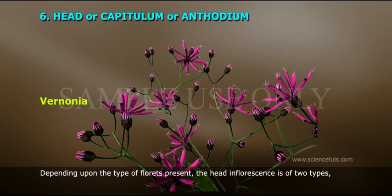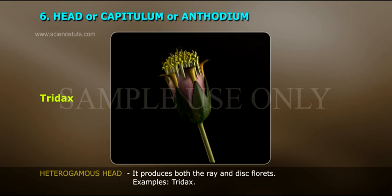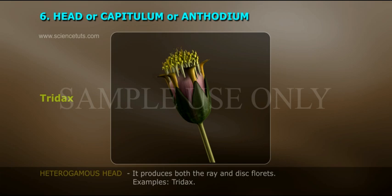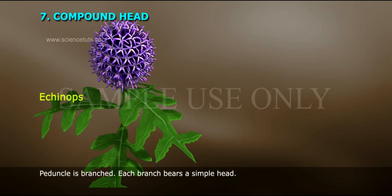Depending upon the type of florets present, head inflorescence is of two types. Homogamous head: produces only one type of floret — example: Vernonia. Heterogamous head: produces both ray and disc florets — examples: Tridax, Helianthus. Compound head: the peduncle is branched and each branch bears a simple head — examples: Echinops, Sphaeranthus.